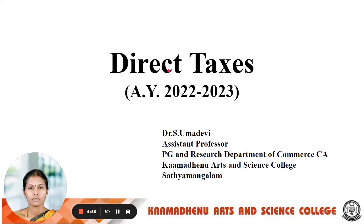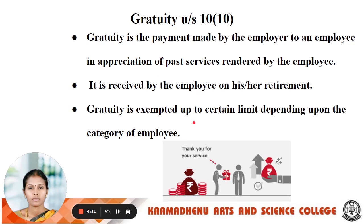Hi friends, in this video we are discussing about Gratuity in Direct Tax. First we see the meaning of Gratuity. Gratuity under Section 10, subsection 10. Gratuity is a payment made by an employer to an employee in appreciation of past services rendered by the employee. It is nothing but the amount paid by the employer to the employee for his long and loyal services. It is received by an employee on his or her retirement. Gratuity is exempted up to certain limits depending upon the category of employee.